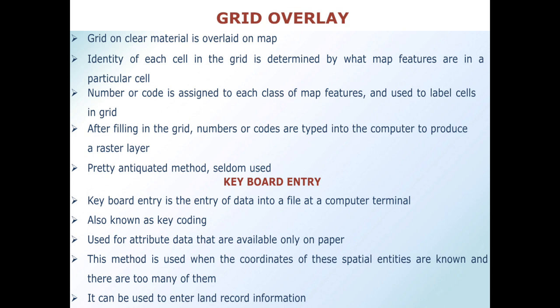The second method is keyboard entry — the entry of data into a file at a computer terminal, also known as key coding. It is used for attribute data that are available only on paper, and is used when the coordinates of spatial entities are known. It can be used to enter land record information.